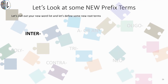The next new prefix is 'inter' — I-N-T-E-R. Go ahead and see if you can find that on the word list and tell me what it means. They're nice and alphabetical on your word list, so 'inter' refers to being between two things.